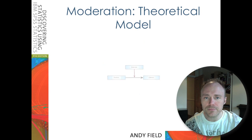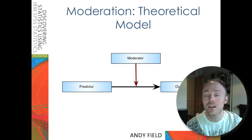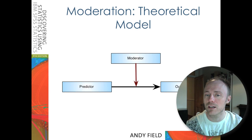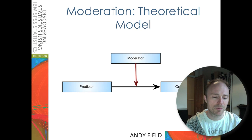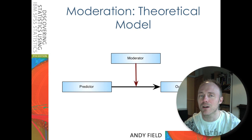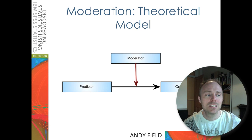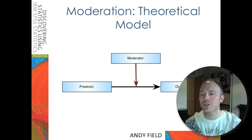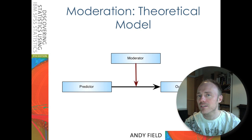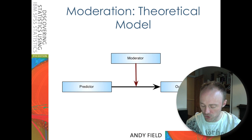What moderation implies theoretically is that you've got some kind of predictor — in our case, video game use — and some kind of outcome variable, which is aggression. The moderator, callous unemotional traits, moderates this relationship. So you can imagine a correlation or a beta in a regression model — there's a quantified relationship between video games and aggression — and what we're saying is the size or the nature of that relationship changes as a function of callous and unemotional traits.